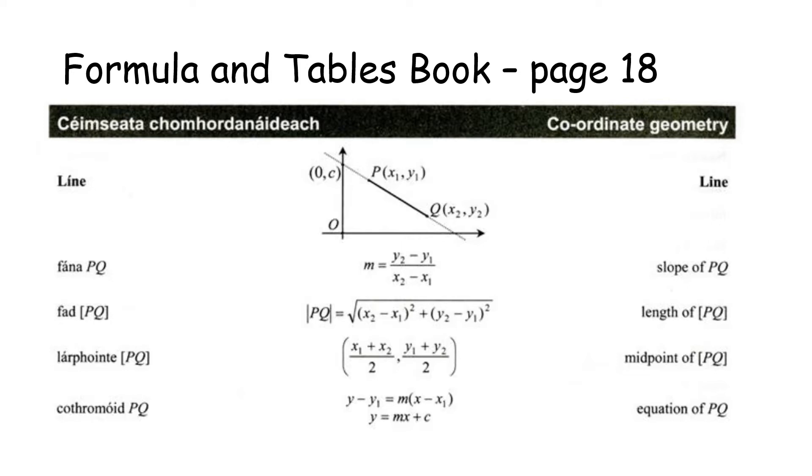Also note that there's a picture at the top of the page which can be really useful. This picture shows two points, so it shows us first of all how to label the points. Here we have P which is X1, Y1, Q which is X2, Y2. It also gives us a really important piece of information here which is 0C and that will link to the equation of the line. So it's not just the four formulas that are really important, but that little picture will also be of great benefit to you.